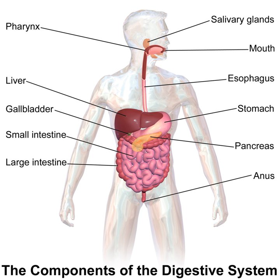Different phases of digestion take place including the cephalic phase, gastric phase, and intestinal phase. The cephalic phase occurs at the sight, thought, and smell of food, which stimulate the cerebral cortex. Taste and smell stimuli are sent to the hypothalamus and medulla oblongata, after which signals are routed through the vagus nerve and release of acetylcholine. Gastric secretion at this phase rises to 40% of maximum rate. Acidity in the stomach is not buffered by food at this point and thus acts to inhibit parietal cell secretion of acid and G-cell activity via D-cell secretion of somatostatin.